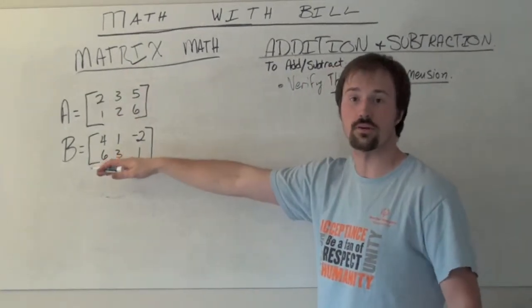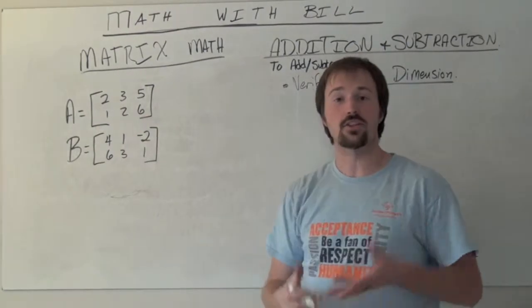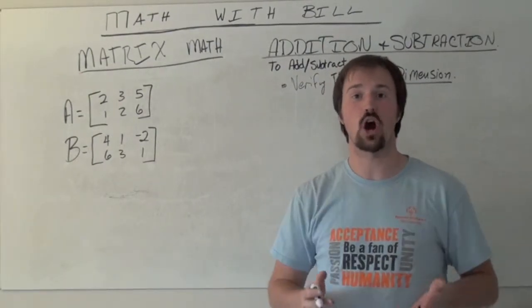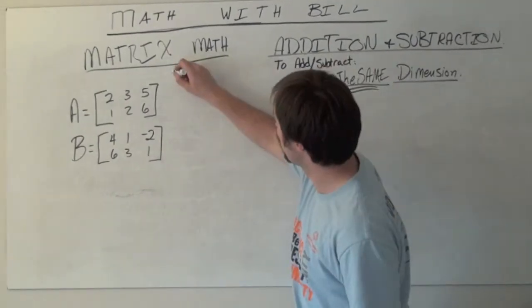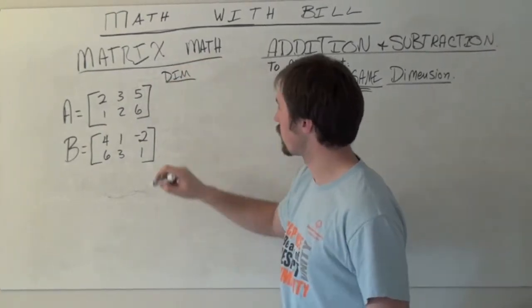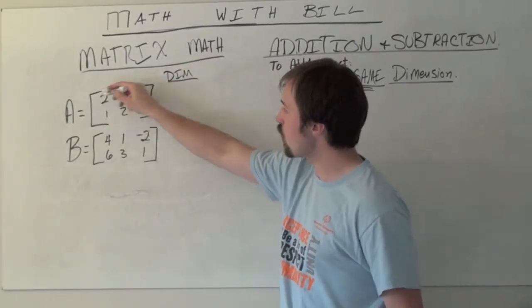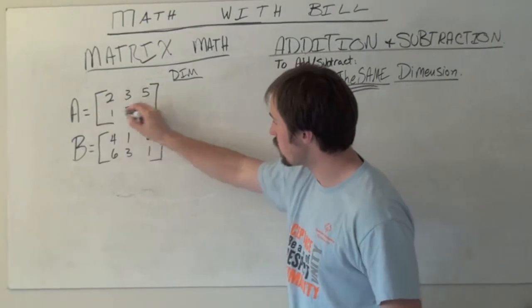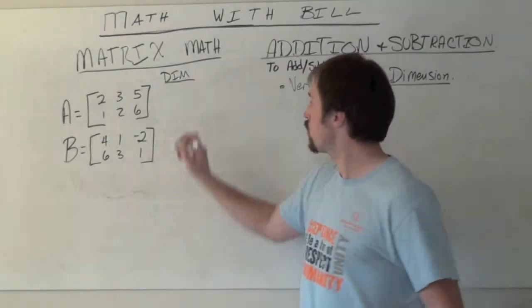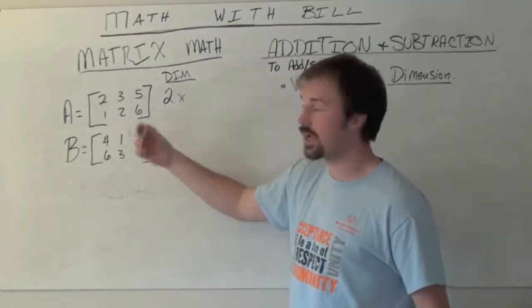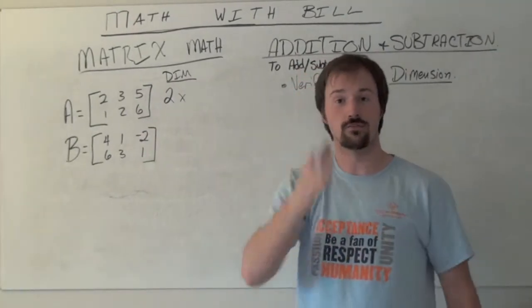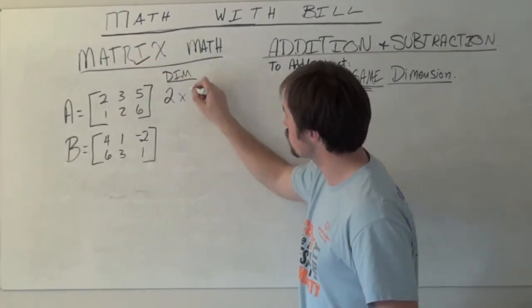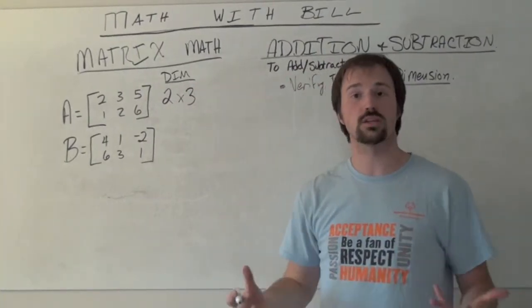We're working with two matrices, matrix A and matrix B. The dimension tells us how many rows and columns we have for any given matrix. For matrix A, we have two rows: the 2, 3, 5 line and the 1, 2, 6 line. We count the columns—the 2, 1; the 3, 2; and the 5, 6—so we have three columns, giving us a dimension of 2 by 3.